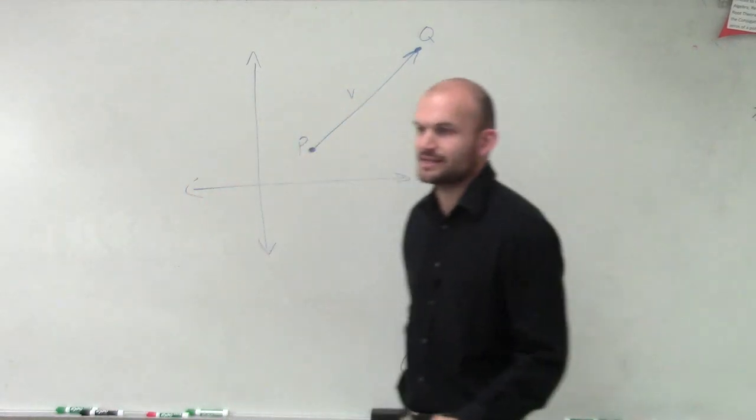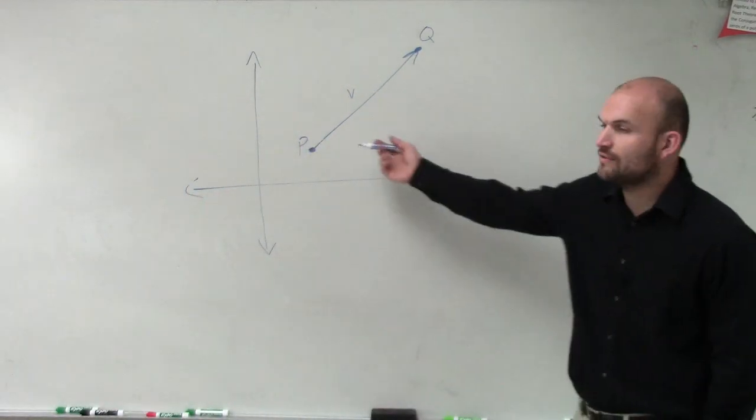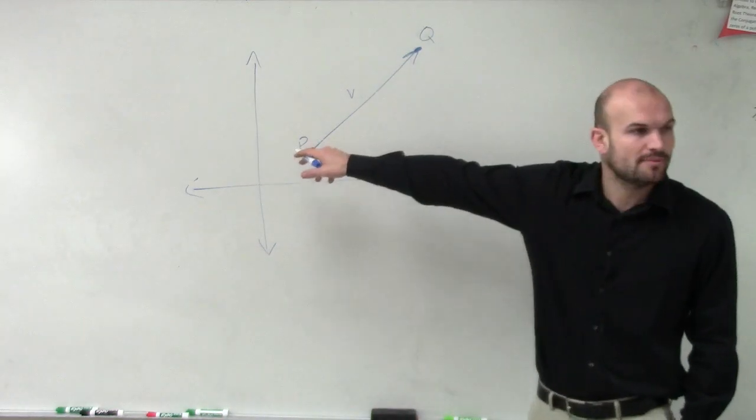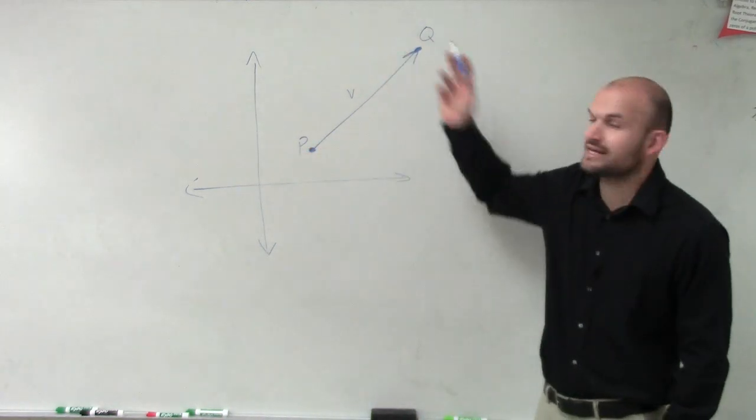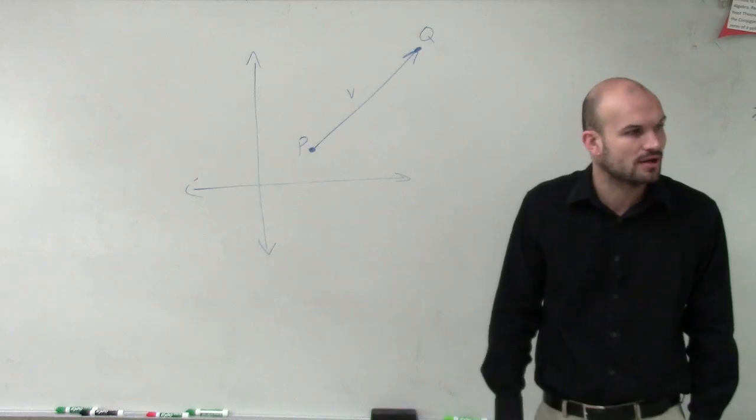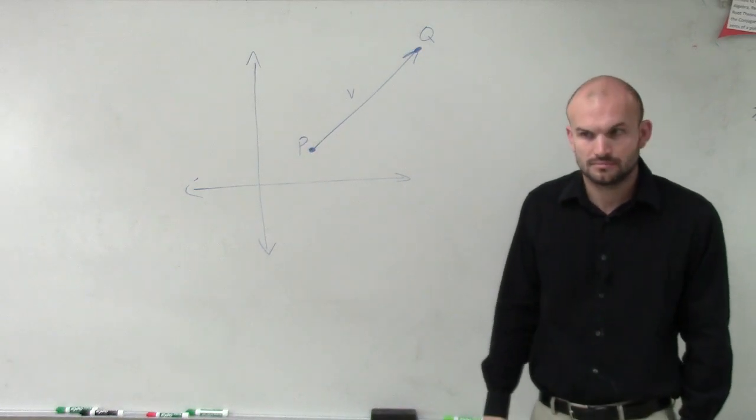But if I was going to go and plot this on the Cartesian coordinate system, we know that each one of these coordinates, p, has two coordinate points, an x and a y. And we could say that q are going to have an x and a y as well.